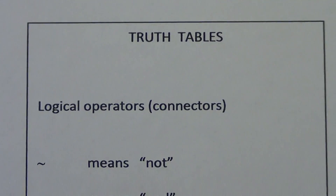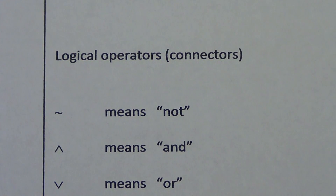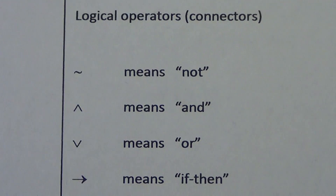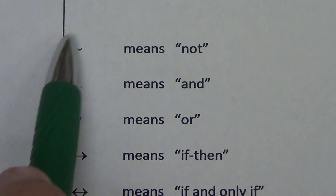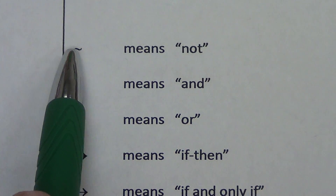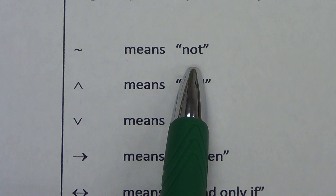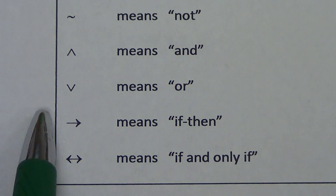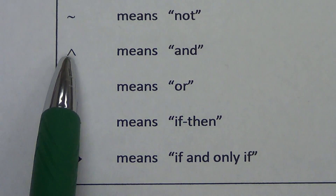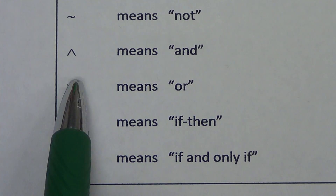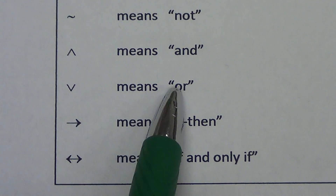So let's talk about a couple things. First, we need to look at these things called operators or connectors — some symbols that we're going to be dealing with. The first one we're already familiar with: this little squiggly-looking thing means 'not.' Some new ones though: this kind of looks like an A without the little cross, and that means 'and.'